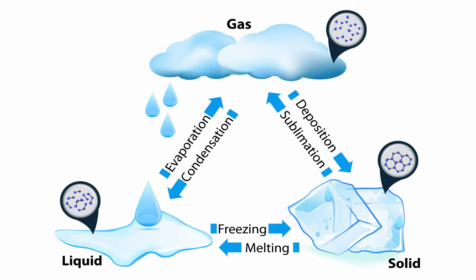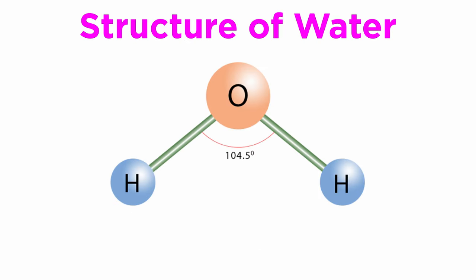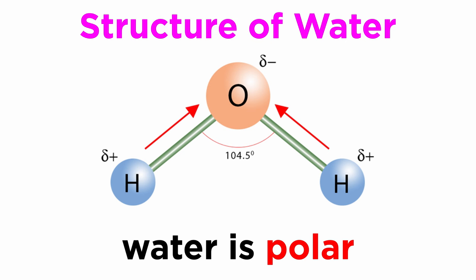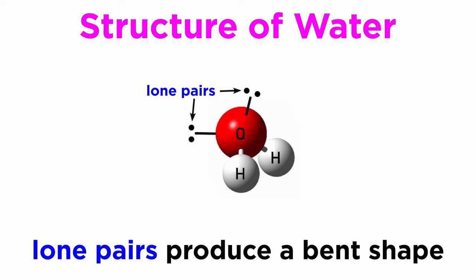It is the only naturally occurring substance on earth that can be readily found in three physical states: solid, liquid, and gas. As we remember from our study of chemistry, water, or H2O, is made up of two hydrogen atoms and an oxygen atom. What makes this seemingly simple compound so special is its polarity. There's a partial positive charge on one side and a partial negative charge on the other, due to the polar OH bonds. The presence of two lone pairs of electrons on the oxygen atom gives water its bent shape, resulting in the overall net dipole.